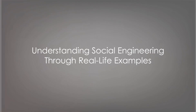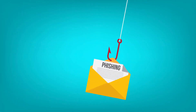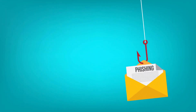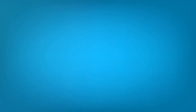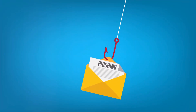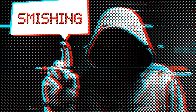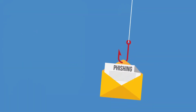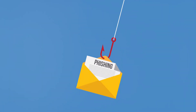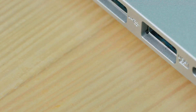So, what exactly is social engineering? Let's start with a common form known as phishing. You receive an email from a seemingly reputable organization, say your bank, urgently requesting you to update your account details. The email looks authentic — the logo, the format, everything checks out. But here's the catch: it's not from your bank. It's a scammer posing as your bank, hoping you'll fall into their trap and hand over your sensitive information.